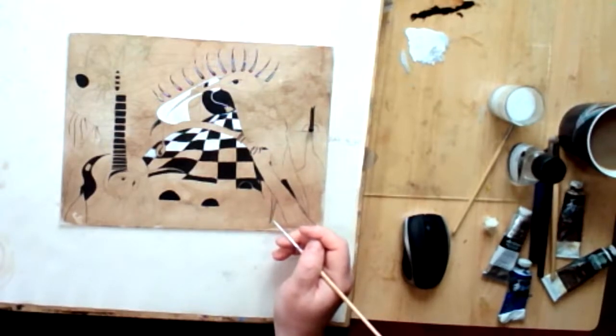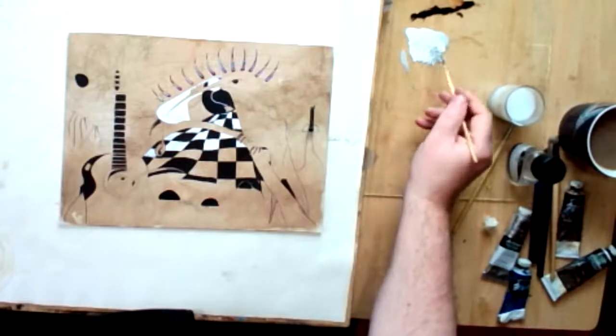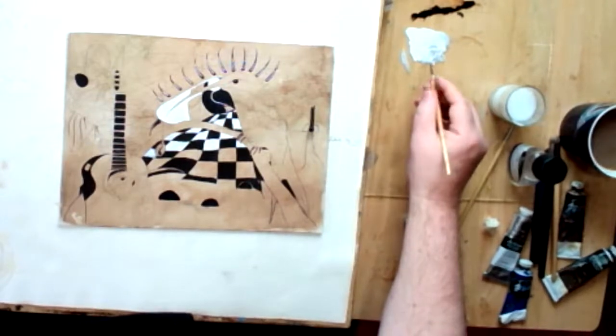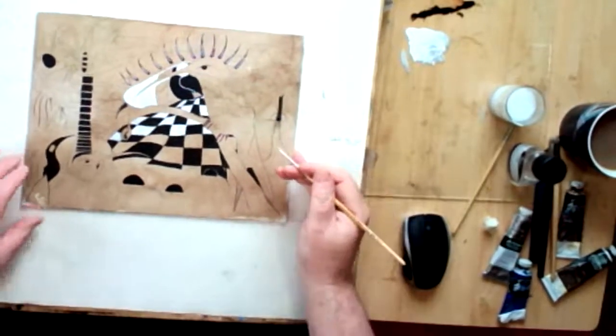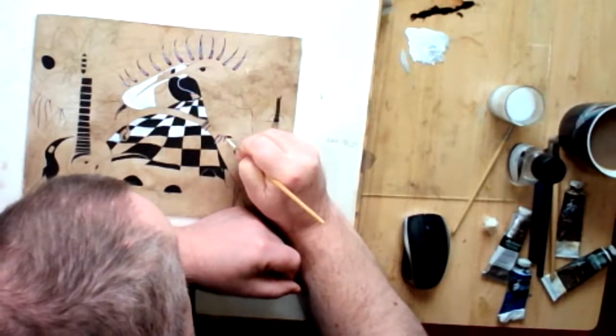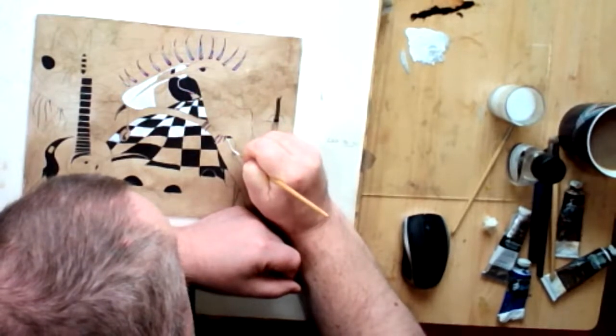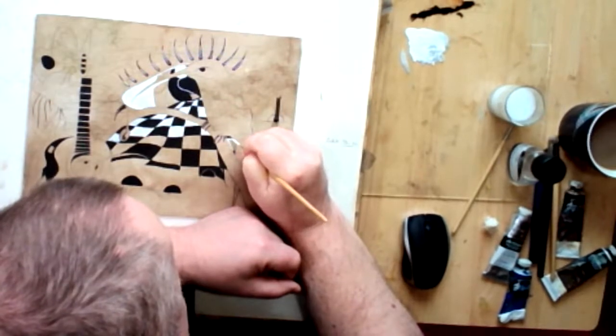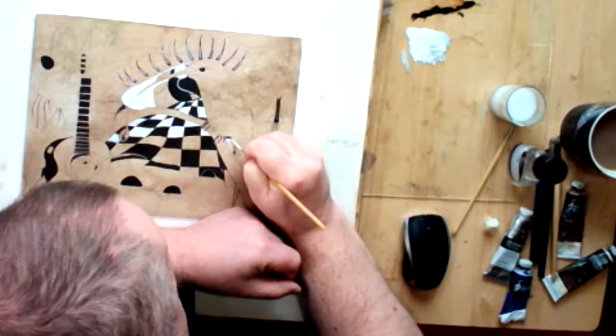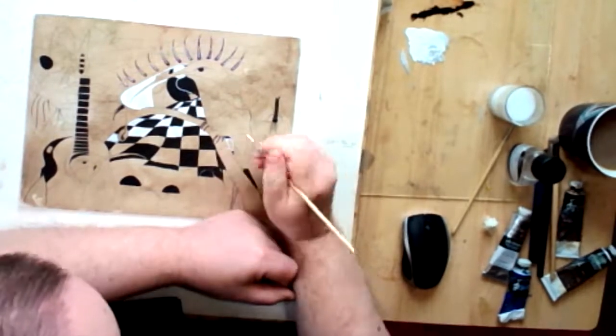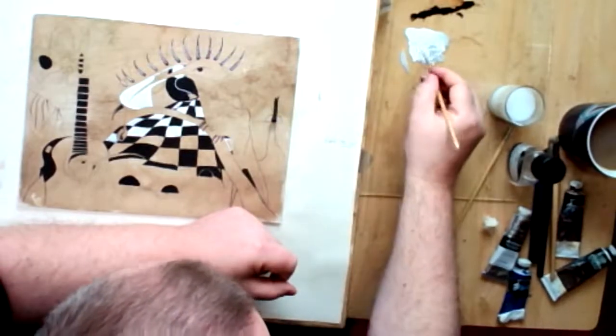I'm fairly happy with that. If I fill in this negative shape here which is the chessboard, this little negative space helps to define the positive form of the branch where the hummingbird is resting and the underside of the hummingbird.